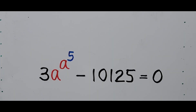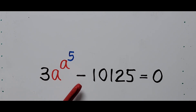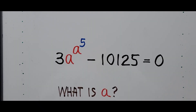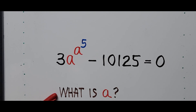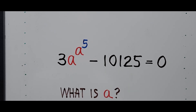Welcome to Cassiano Easy Math. This video is about solving an exponential equation: 3 times a raised to the power of a raised to the fifth power minus 10,125 equals zero. We are going to find the value of a. For those new to my channel, please like and subscribe for more videos.